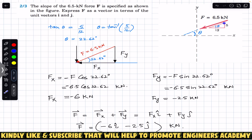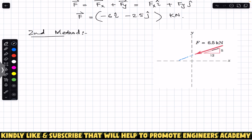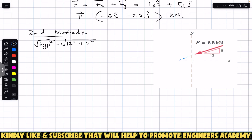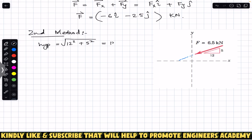This is one method of using the triangle to find the rectangular components. There is another method using this right angle triangle to find F of x and F of y. The second approach is to find the hypotenuse of this right angle triangle using the Pythagorean theorem: hypotenuse squared equals base squared plus perpendicular squared. So 12 squared plus 5 squared gives us 13. The hypotenuse of that triangle is 13.